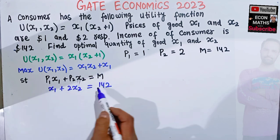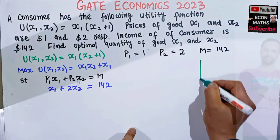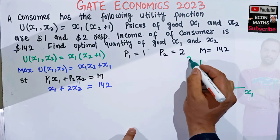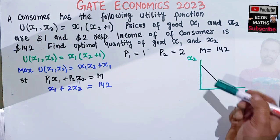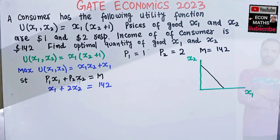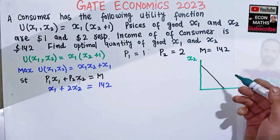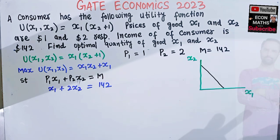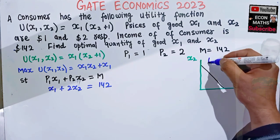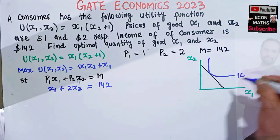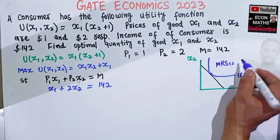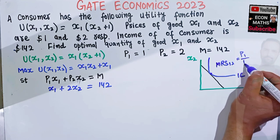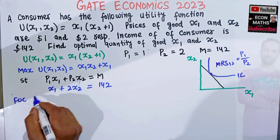Graphically, with good x1 on the horizontal axis and good x2 on the vertical axis, the maximization problem means we want to reach the highest indifference curve given the budget line. The optimal bundle lies at the point where the indifference curve is tangent to the budget line. At this point, the marginal rate of substitution between good one and two equals the ratio of prices p1/p2.